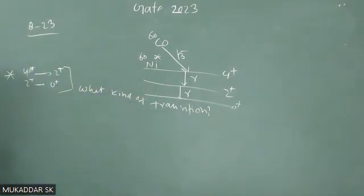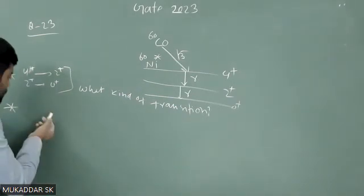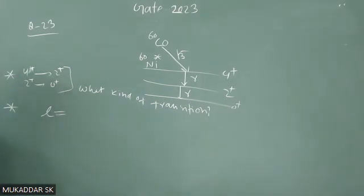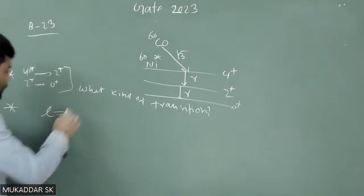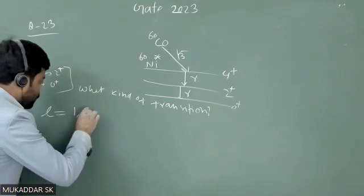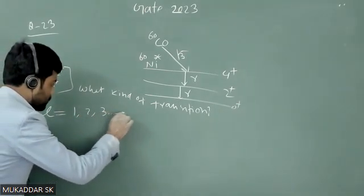We have discussed in nuclear physics that if you have L value, angular momentum of emitted photon or emitted gamma particle, if it is taking value 1, 2, 3, and so on, 1 is representing dipole transition.